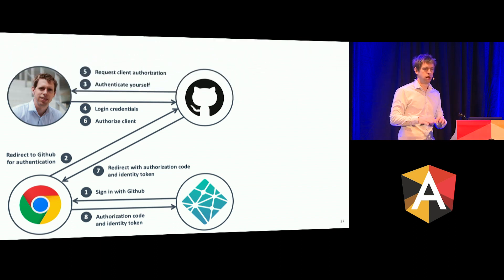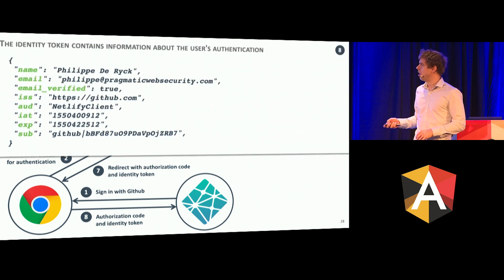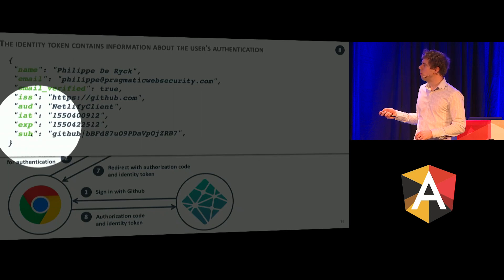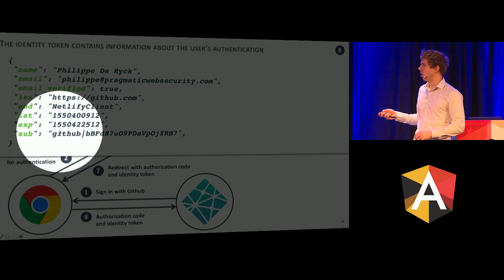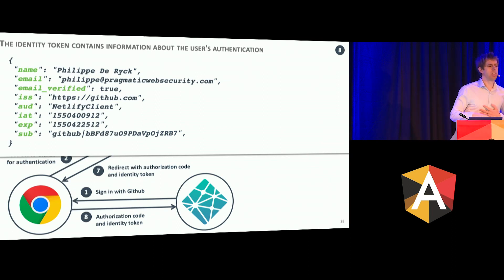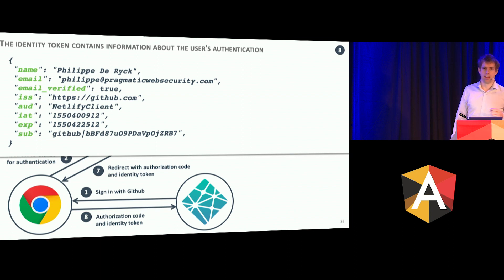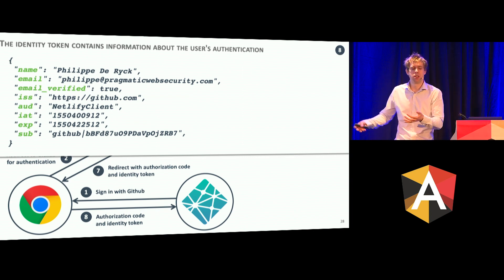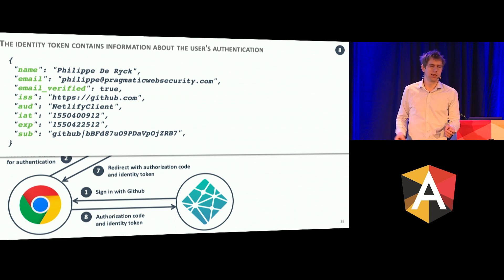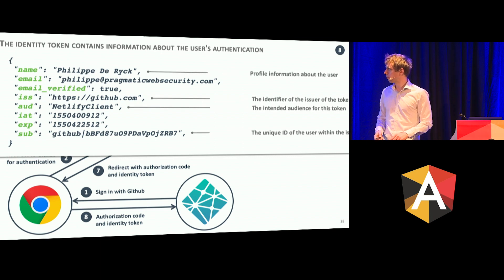Here's the identity token that you actually get. You can see my name is in there, and the "sub" field is my unique user identifier at GitHub — it's a fictional one here, but this is essentially my user ID at GitHub and it will never change. I can change my name, I can change my email address, but this identifier will always be the same. So Netlify will always be able to link this to my Netlify account. This token is protected — it's a JWT, a JSON Web Token, and it's signed so it cannot be modified by a malicious user.